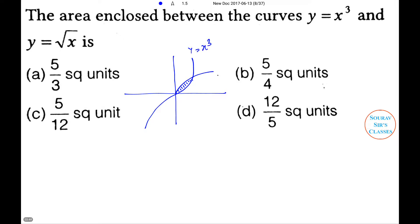This is y equals x cubed and this is y equals root x, and this point is (1,1). So this is the y-axis and this is the x-axis. Now the required area: 0 to 1, root x minus x cubed dx.